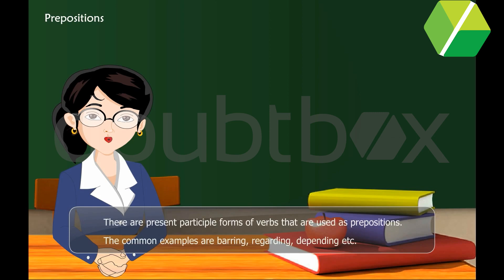There are present participle forms of verbs that are used as prepositions. The common examples are barring, regarding, depending, etc.